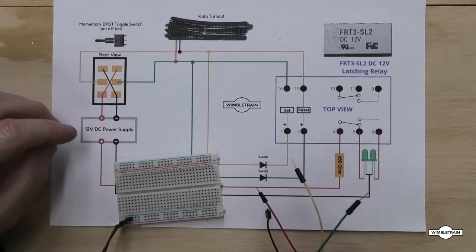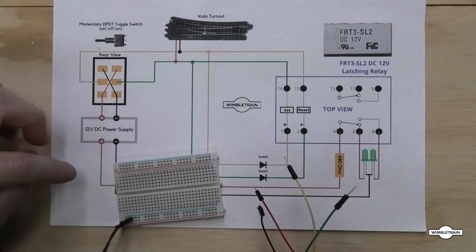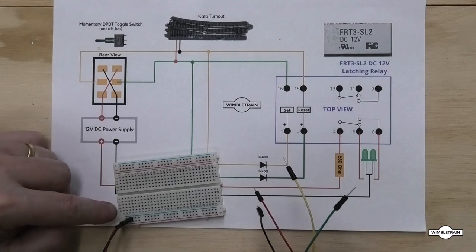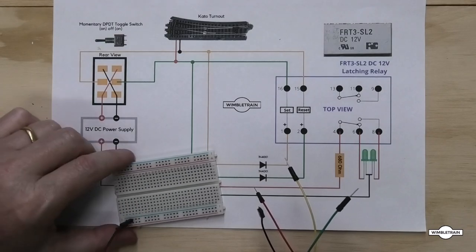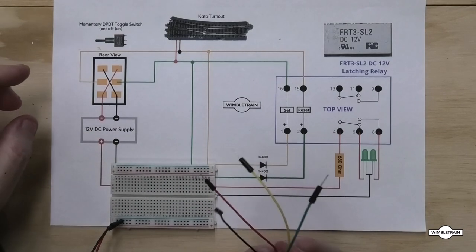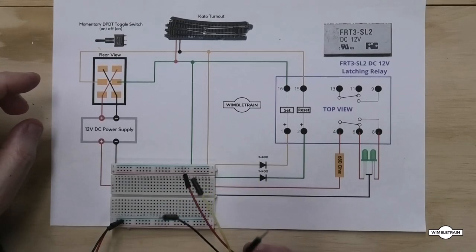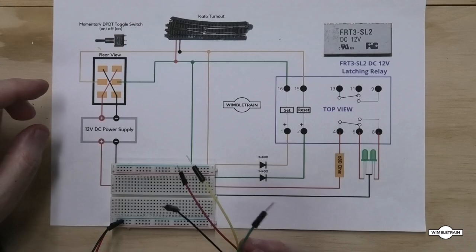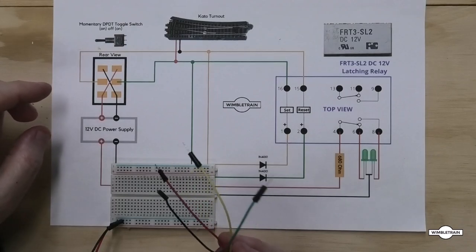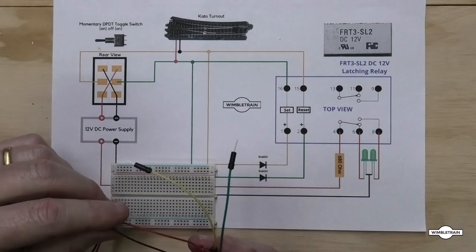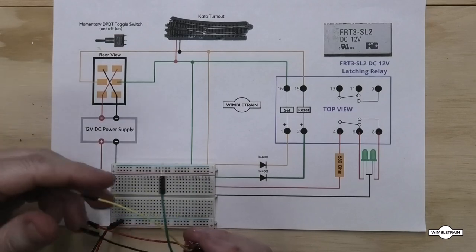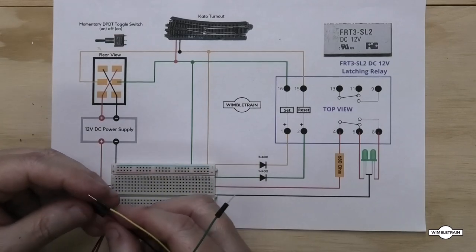So I have my breadboard here now with my 12 volt power supply connected here, positive and negative to these pins. Now we'll connect up our switch, and before we even think about putting the relay on, we'll just test it with the Kato turnout. So I'll just wire this up and then we'll have a look at how that is all connected.